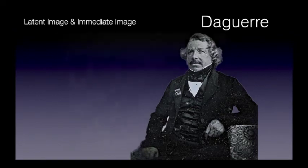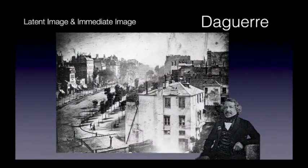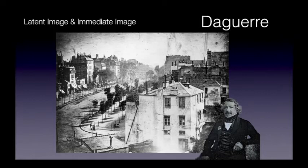In fact, image latency was kind of a surprise to Daguerre as well — Daguerre, the inventor, one of the inventors, along with Niépce, of the daguerreotype process. He had placed some previously exposed plates in a closet and closed the door. He came back later to discover an image had appeared on the plates, and it was only after a period of trial and error that he figured out that it was an open tray of mercury in that same closet that had caused the images to appear.